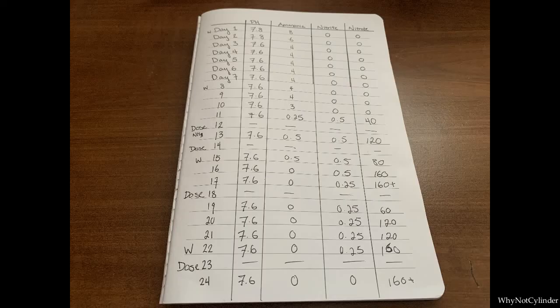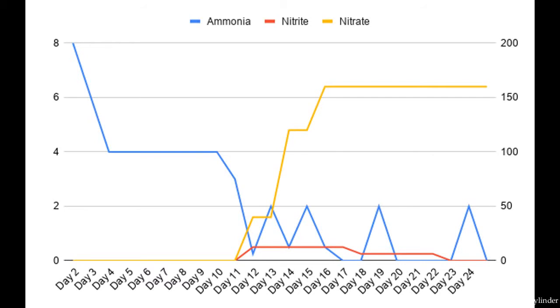After three and a half weeks, my tank is finally cycled! You can see at the bottom of my notebook that I dosed on day 23, and on day 24, I tested the waters and the ammonia and nitrite are zero. I also plotted my results on a graph, so I edited my data a little bit so the graph would look smoother and represent the general trend of cycling. So you can see here the ammonia starts off high and then gradually decreases. And the spikes that you see here here here and here are when I redosed.